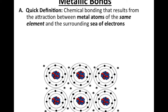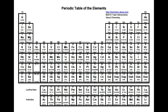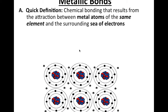A quick definition for metallic bonds: it's the chemical bonding that results from the attraction between metal atoms of the same element and the surrounding sea of electrons. The first important thing to note is that it's metal atoms of the same element. When we have a metallic bond, it's going to be that metal over and over again. Looking at the periodic table, our metals are group one (except hydrogen, which is a non-metal), group two, our transition metals, and some metals on the right side. A metallic bond between lithium, for example, would be lithium bonding with lithium — never lithium bonding with beryllium or sodium bonding with aluminum.